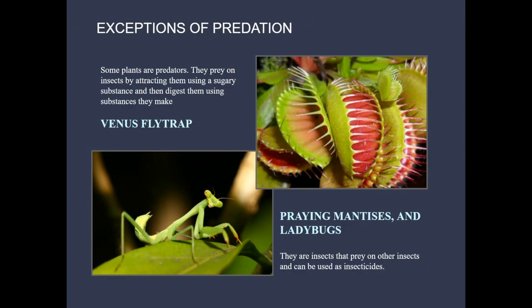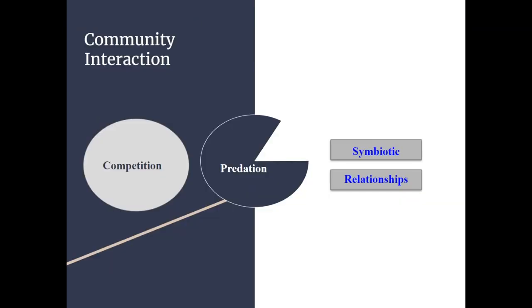There are exceptions when it comes to predation. Two examples you are responsible for: the Venus flytrap, which is a predatory plant capable of feeding on insects using sugary mucus and then digesting them with enzymes — it sucks out their nutrients and drops their empty shells. Another example is the praying mantis and ladybugs — both are insects that prey on other insects, making them predators at their own level, and they can be used as biological insecticides in gardens or farming.